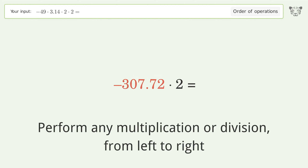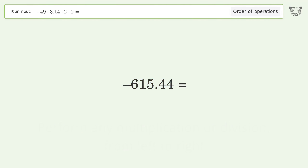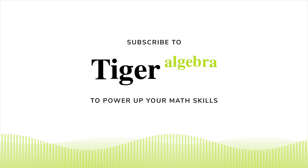Negative 153.86 times 2 equals negative 307.72. Negative 307.72 times 2 equals negative 615.44, and so the final result is negative 615.44.